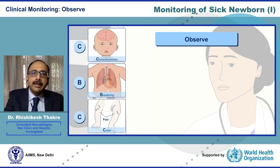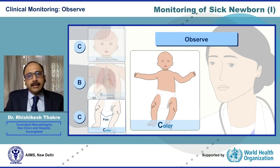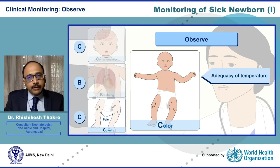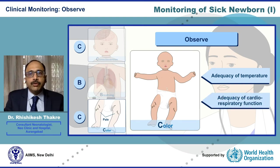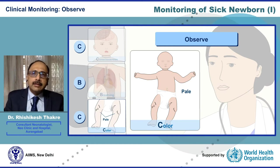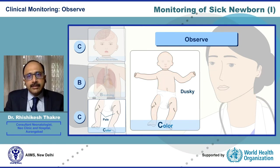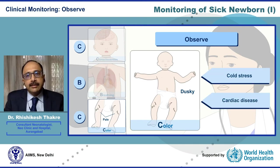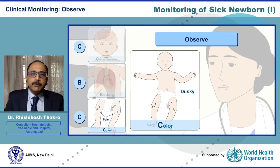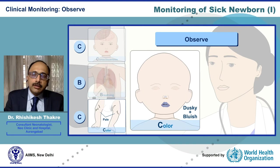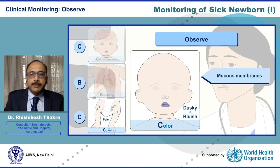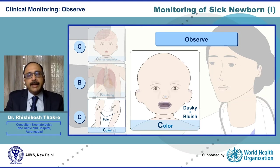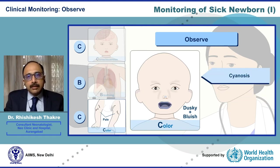Let us look at C, that is Color. A pink color tells us that there is adequacy in terms of thermal care and adequacy in terms of cardiorespiratory function. A pale skin tells us a possibility of cold stress or impending shock, where a dusky extremity tells us a possibility of cold stress or an underlying cardiac disease. Any time we notice duskiness, we must look for bluishness in the mucous membranes to look for central clinical cyanosis. Crying which worsens the cyanosis tells us there is an underlying cyanotic heart.